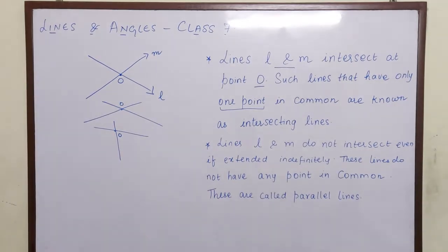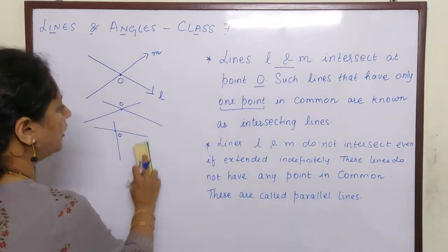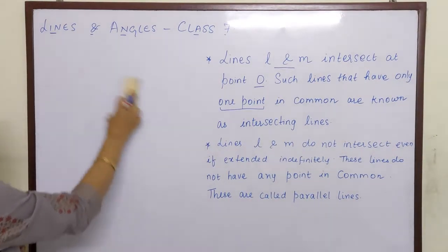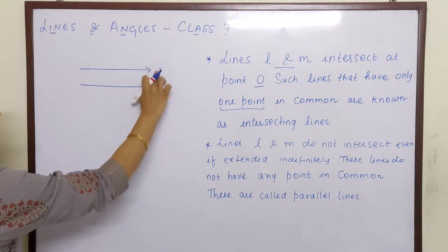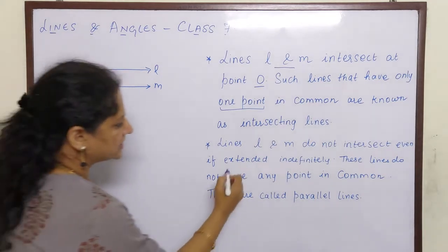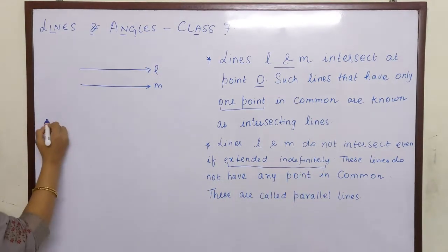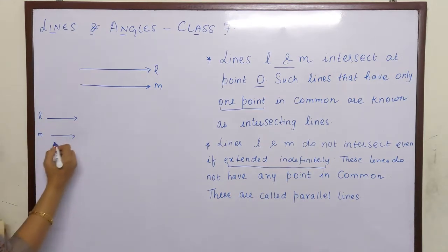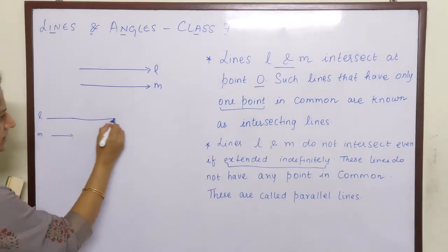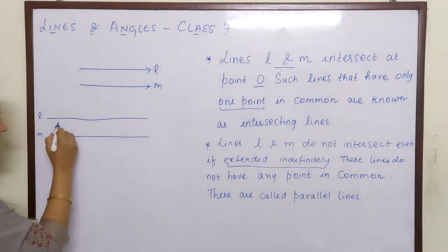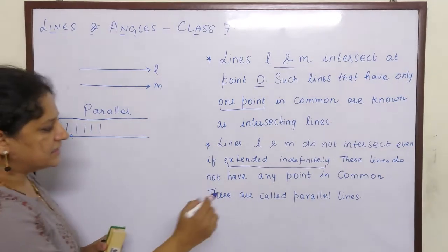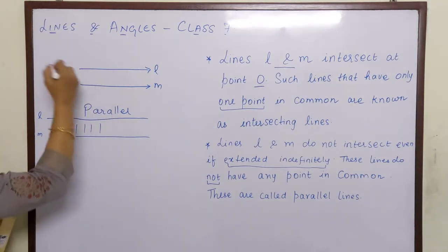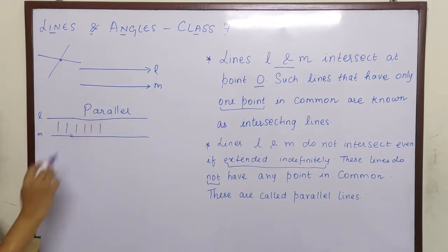Now let us see what are parallel lines. Lines L and M do not intersect — they do not intersect even if extended indefinitely. So even if you keep extending, they do not meet at all. Such lines are called parallel lines. These lines do not have any point in common.